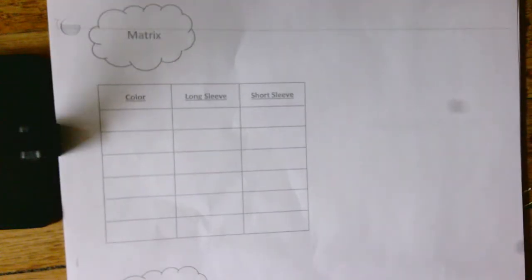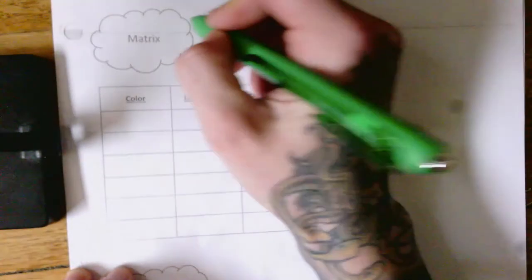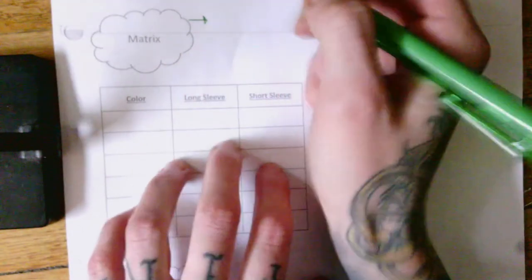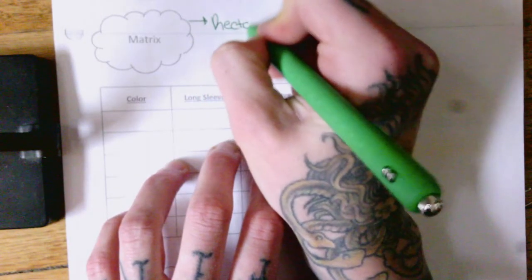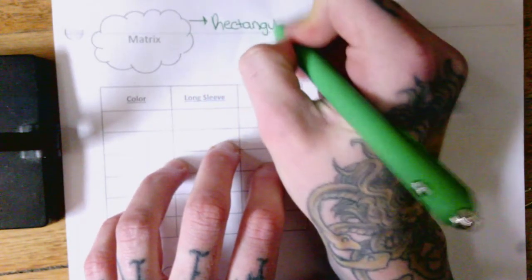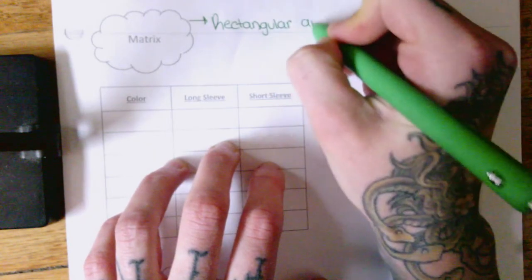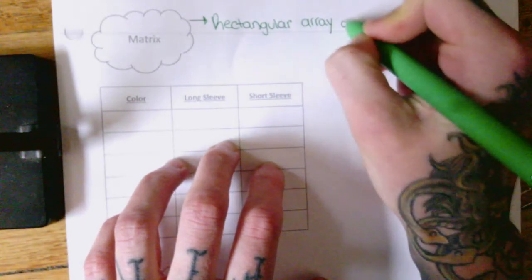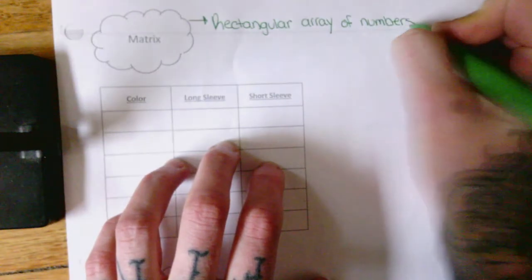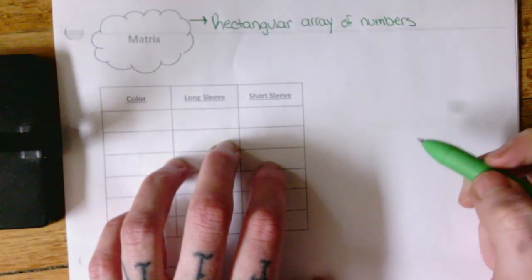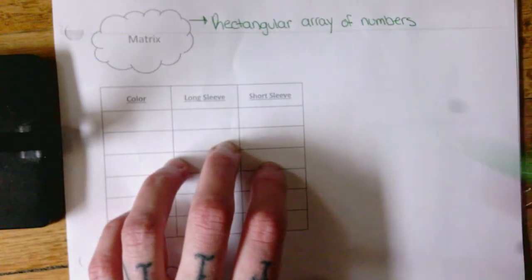So let's get some definitions. A matrix is a rectangular array of numbers. And we label this array of numbers with a capital letter.